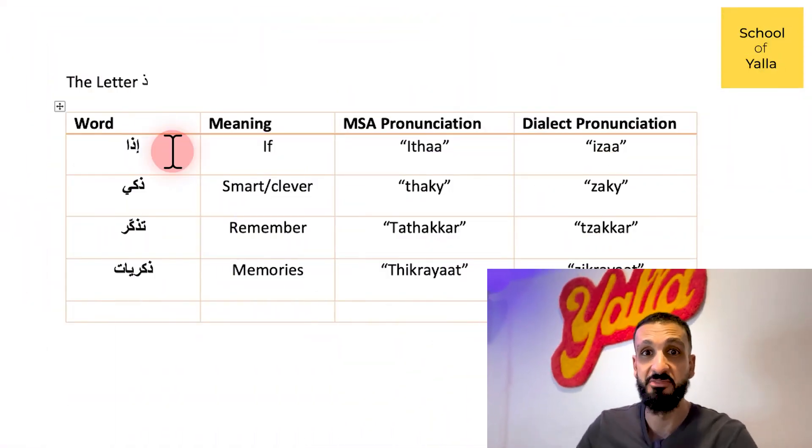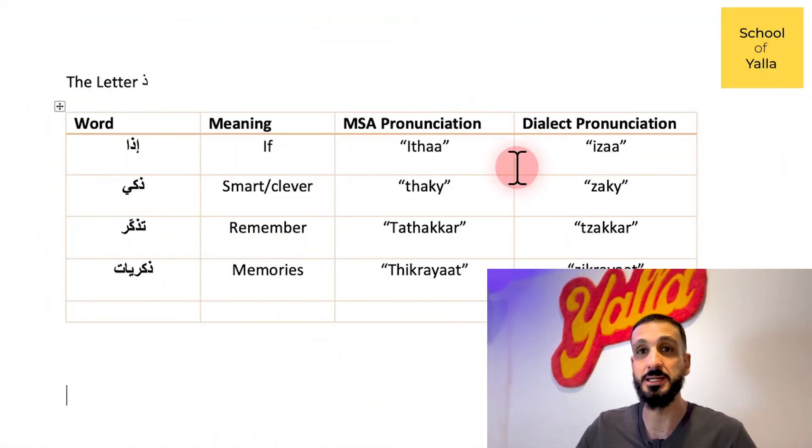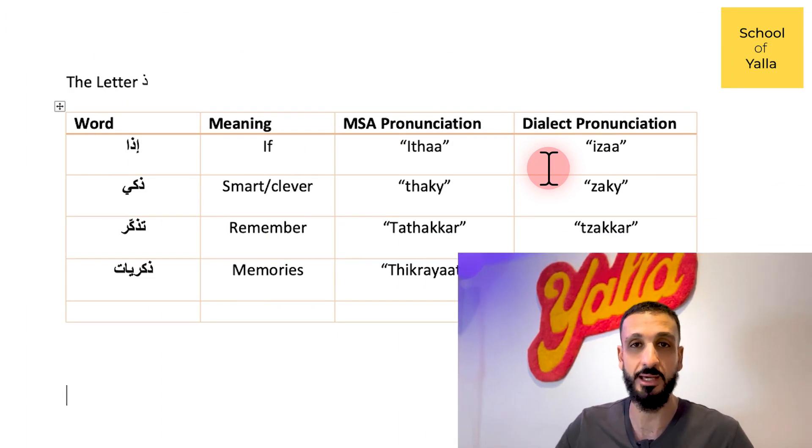A lot of words that have thal in dialect change. First, we have the word "itha", which means "if". In dialect, we pronounce it "isa". Not necessarily every person in the Levant changes this, but it does occur in a lot of places. I'm pointing this out so that if you hear a Z sound, you understand — this is how the thal changes to Z in dialect.